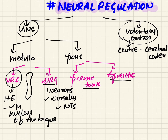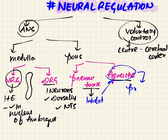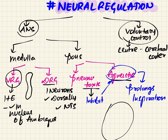Coming to the pons centers: the main function of the pneumotaxic center is that it inhibits the apneustic center, and the apneustic center's main function is to prolong inspiration. In the pons, the pneumotaxic center is found in the upper part and the apneustic center is found in the lower part.